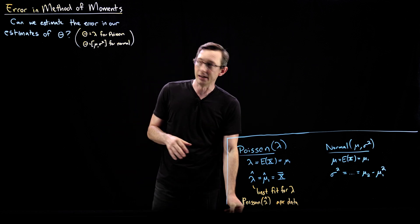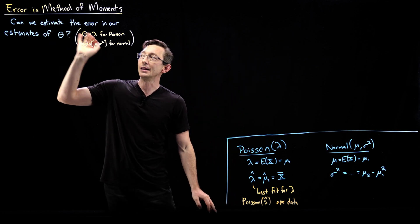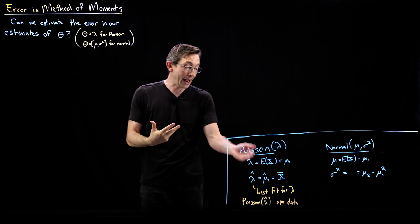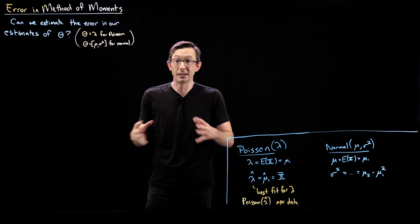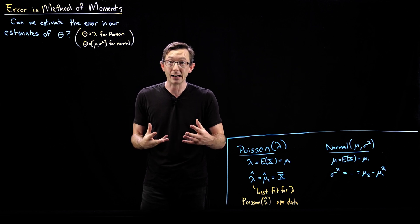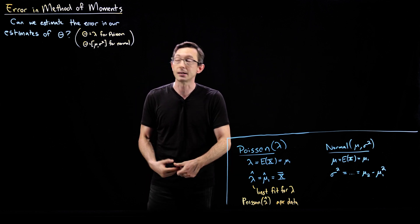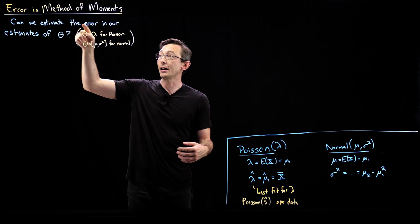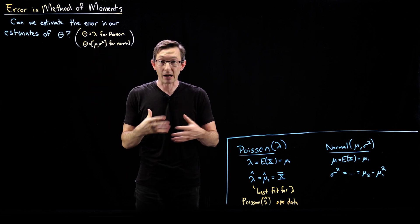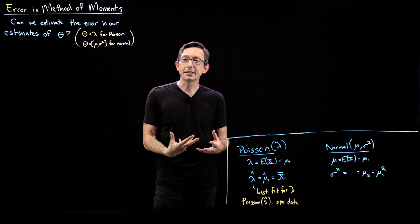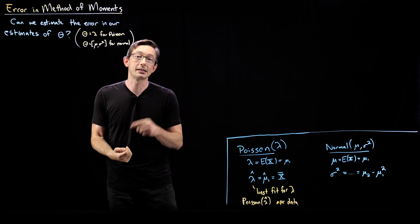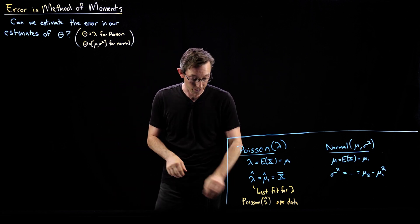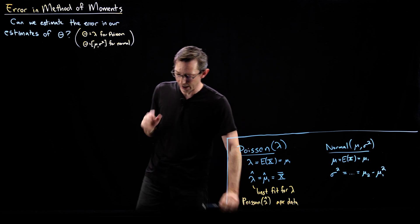The question this time is: can we estimate the error in our estimates of these parameter values? We have this estimate lambda hat from data — maybe 50 data samples — and we want an estimate of the error in that parameter estimate from probability theory. The answer is sometimes yes and sometimes no; sometimes you can, and sometimes it's quite challenging.